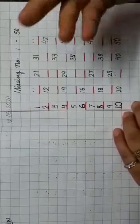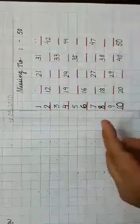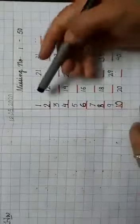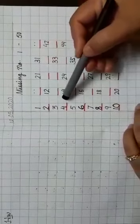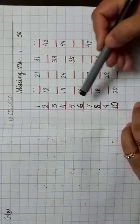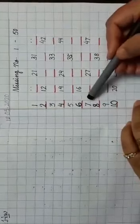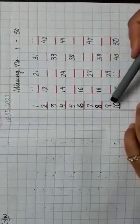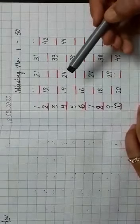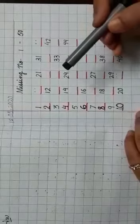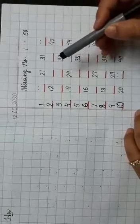In this way you have to complete this table, you have to complete this counting. So orally we will do the practice. Say along with me: one, two, three, four, five, six, seven, eight, nine, ten. Again I am saying, say and write, but whenever you are doing your writing work you have to say loudly.